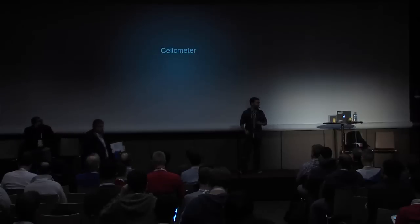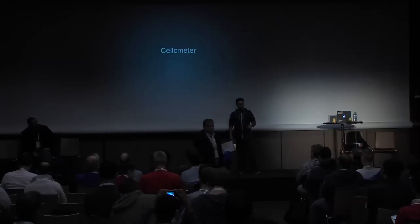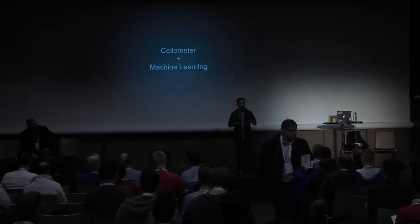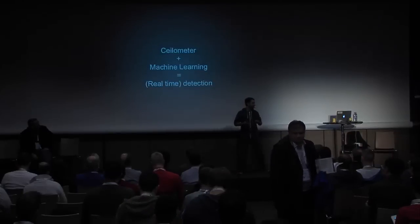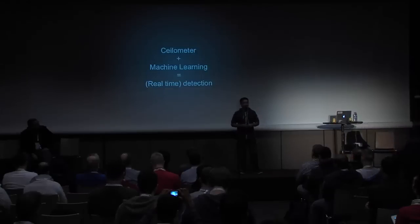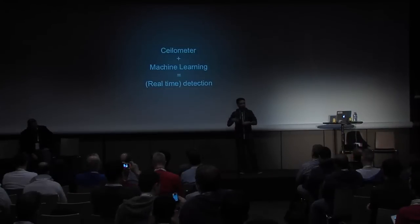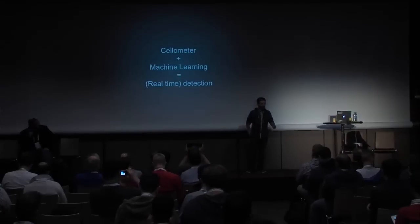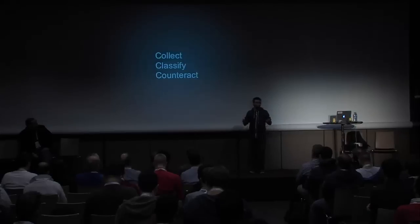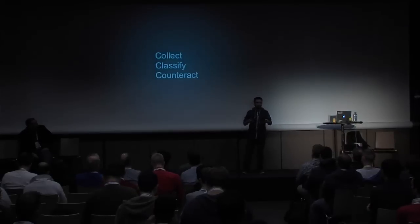The formula we use: we take Ceilometer, we add some magical machine learning, and with that we get real-time fraudulent activity detection. Real-time is in parenthesis because of course you can do it offline — you can save the data and do a data experiment — but it's also possible to do it in real-time. We divide the method in three steps: collect, then classify, and then counteract, taking action.